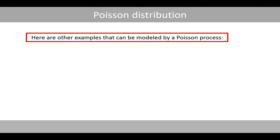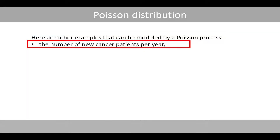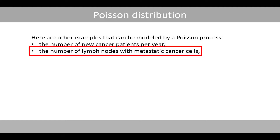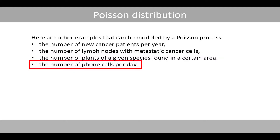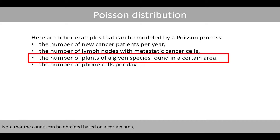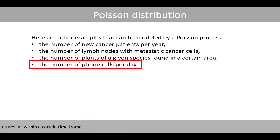Here are other examples that can be modeled by a Poisson process: the number of new cancer patients per year, the number of lymph nodes with metastatic cancer cells, the number of plants of a given species found in a certain area, and the number of phone calls per day. Note that the counts can be obtained based on a certain area as well as within a certain time frame.